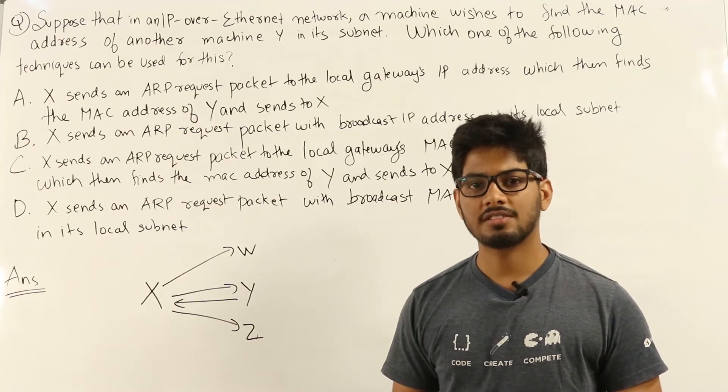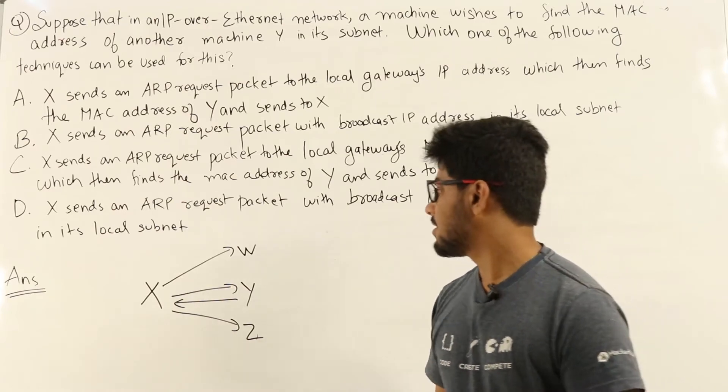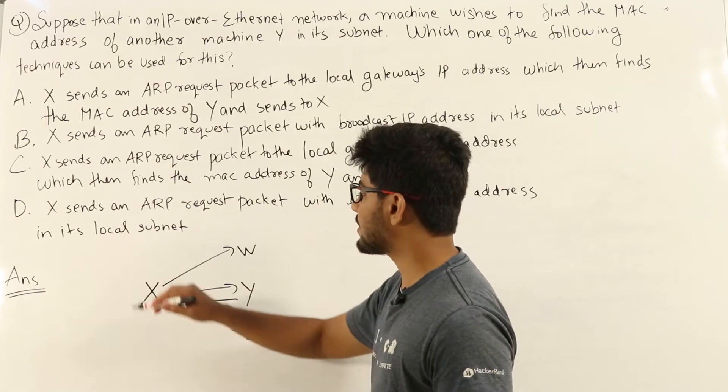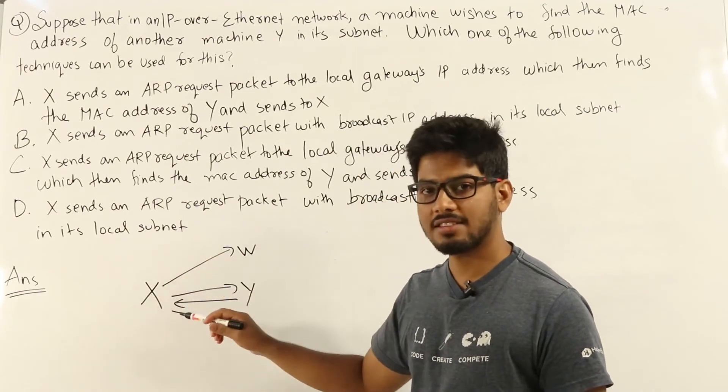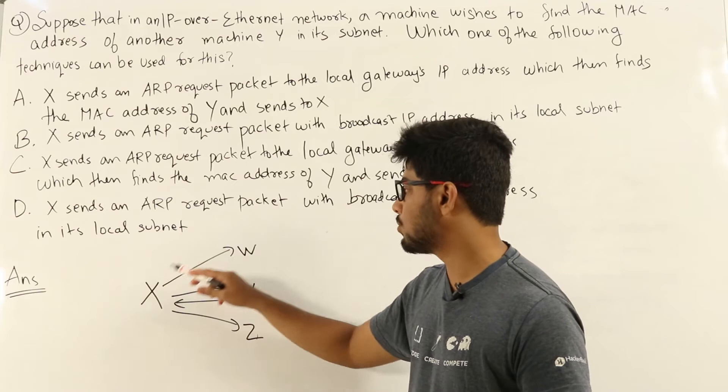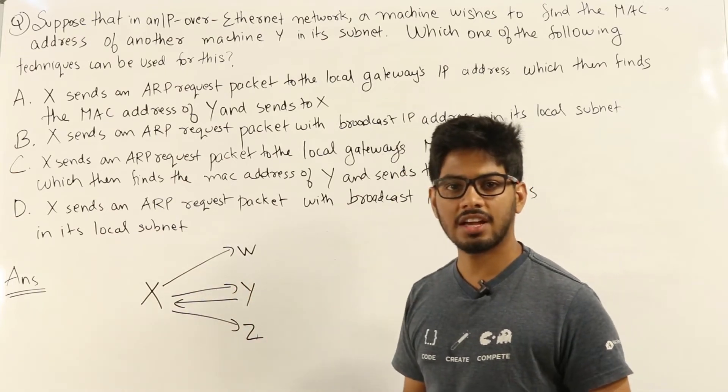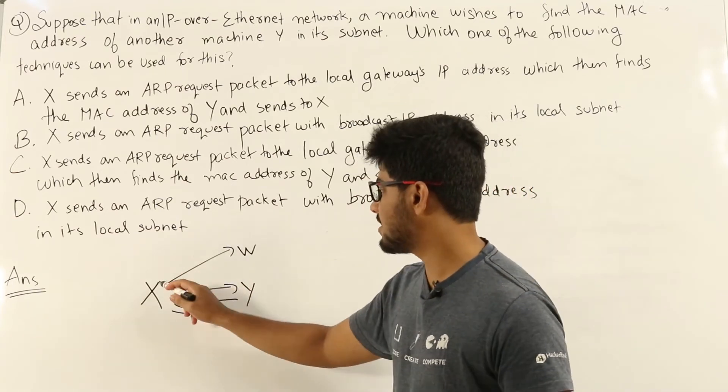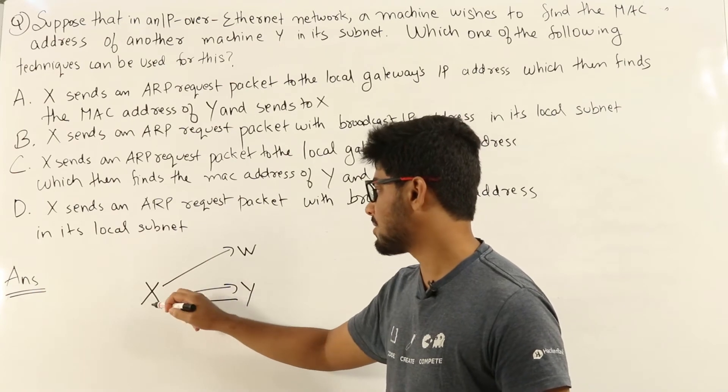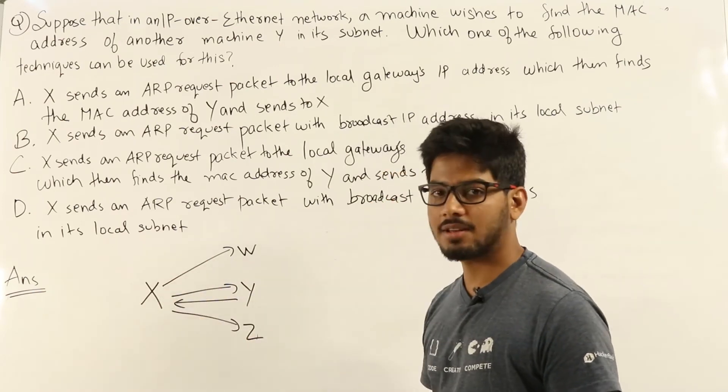To learn more about ARP, please refer to the video lectures. Now, how ARP works is, the machine X will be sending a broadcast ARP request packet throughout its subnet. What it will be using is broadcast MAC address. So, X will be sending a broadcast message to all the machines in its subnet.